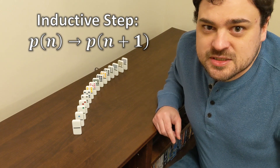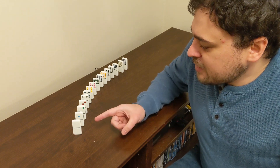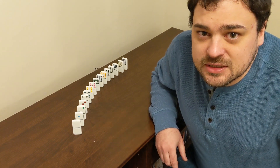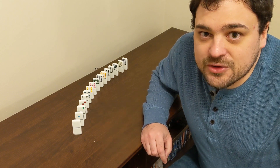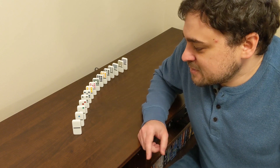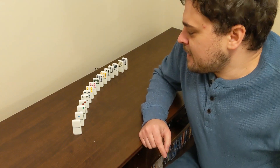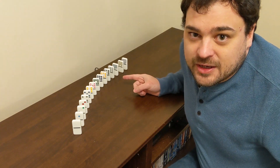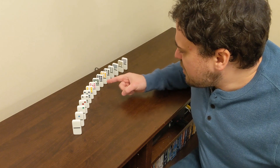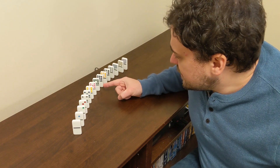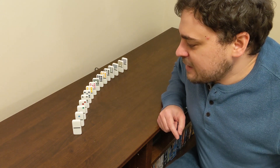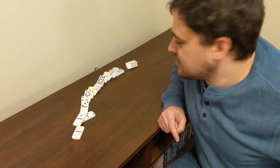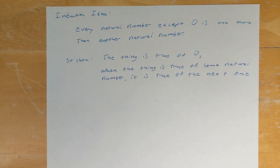So the way this proof works: how do I know that the first domino is going to fall over? We have to first establish that. Well, that one's obvious — I'm going to push it. As for all the other dominoes in the line, all I need to do is make sure that each domino is going to get knocked over by the previous one, so that now I can finally conclude all the dominoes fall.